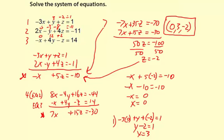Visually, these are three different planes or flat surfaces. They all intersect at a common point: 0, 3, negative 2.